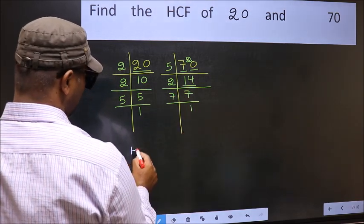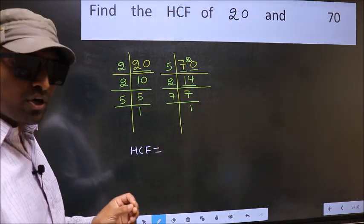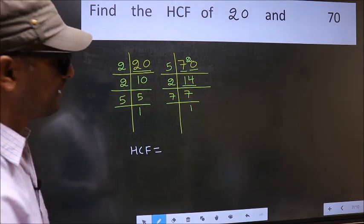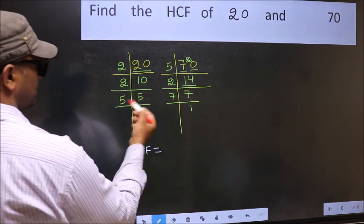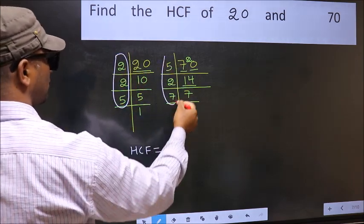Therefore, our HCF is the product of the numbers which should be present in these 2 places, i.e., here and also here.